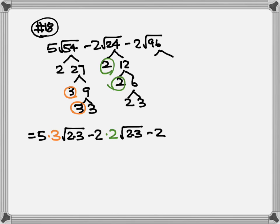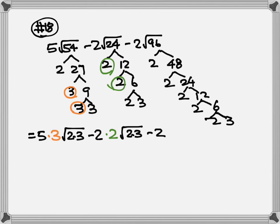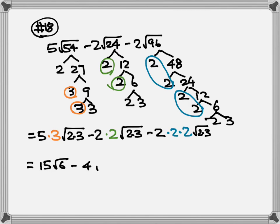Minus 2, break down 96: 96 goes to 2, 48; 2, 24; 2, 12; 2, 6; 2 and 3. Let's find the pairs: here's my pair of 2, one 2 goes out; here's another pair, another 2 goes out. After that we only have 2 and 3 left, so 2 and 3 stay inside. Then multiply all the numbers outside times outside, inside stays inside: so 5 times 3 is 15, negative 2 times 2 is negative 4, negative 2 times 4 is negative 8 — all with square root of 6 inside. Since all numbers inside are 6, I can add or subtract outside: 15 minus 4 minus 8 equals 3 square roots of 6.